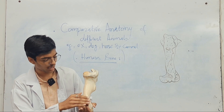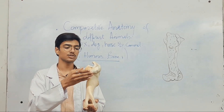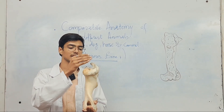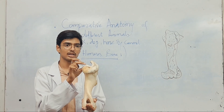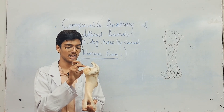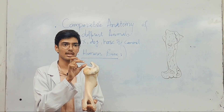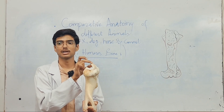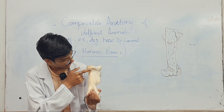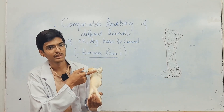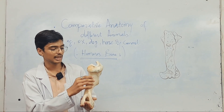This is the caudal aspect of the humerus. From the caudal aspect, you can clearly see the lesser tubercle, but it is not as visible as the greater tubercle. And this area is also called the surgical neck.